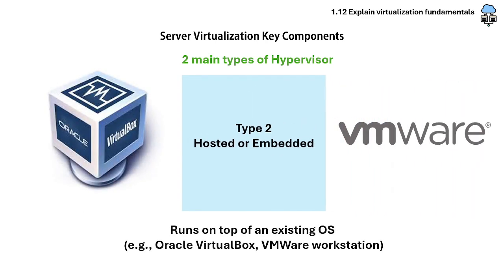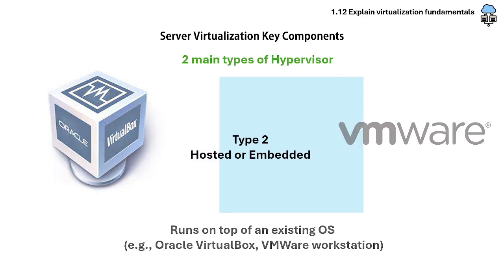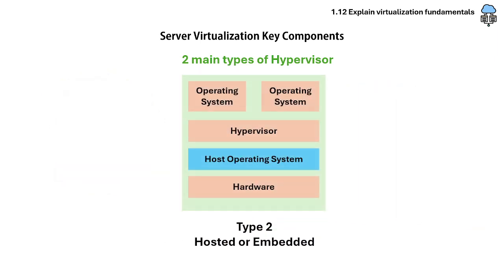The type 2, or hosted hypervisor, is installed on your operating system. Hosted hypervisors are significantly easier to set up and get running as you can use the more user-friendly operating system. They're often used for testing and development purposes, as they run on the operating system to try out new programs or features without affecting the host operating system.